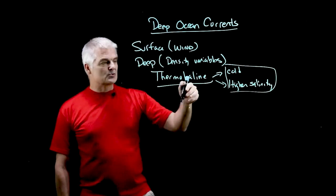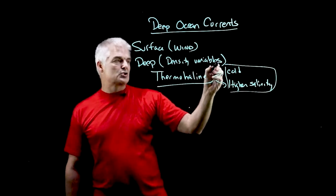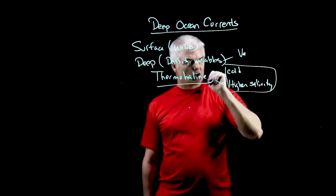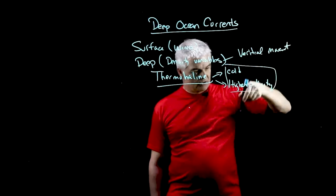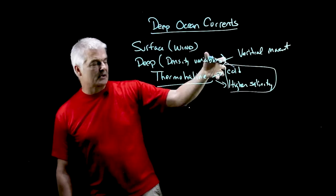And that's exactly what happens. Now the deep ocean currents are caused initially by a vertical movement. So going down where surface is horizontal, this is vertical.